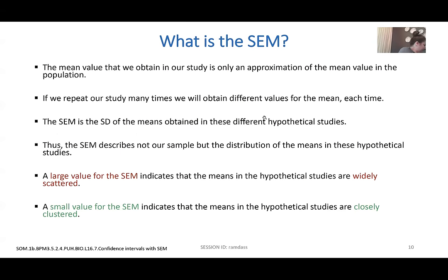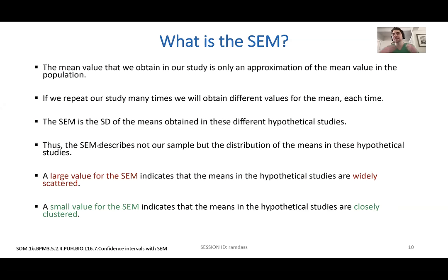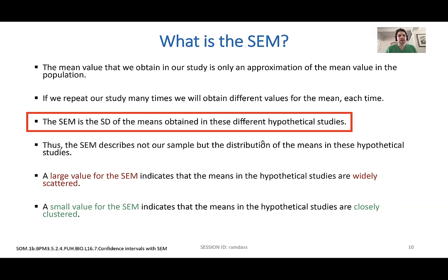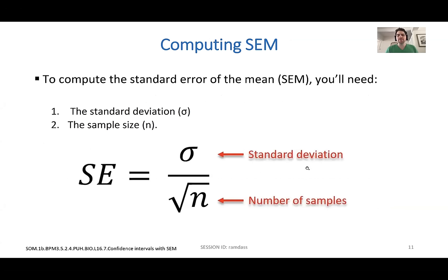Standard error of the mean is like standard deviation, but you're taking into account the number of subjects. It's a better testing solution because you're incorporating more factors. The key thing to remember: the more samples you have, the lower the standard error of the mean. By increasing the denominator — having more subjects — the standard error of the mean decreases. This makes it a better test, which makes sense: you'd rather do a clinical trial with 5,000 people than five.